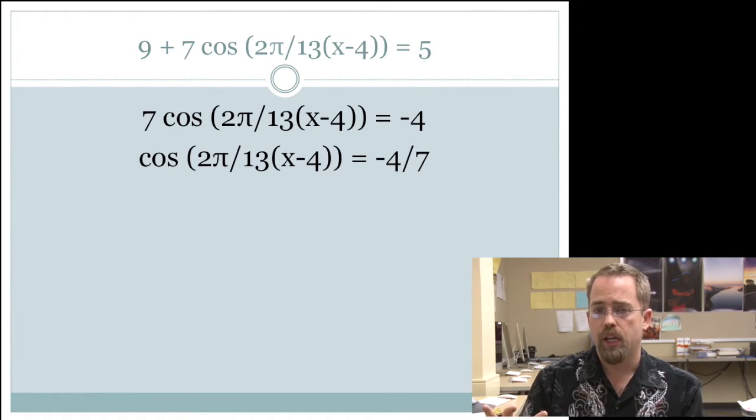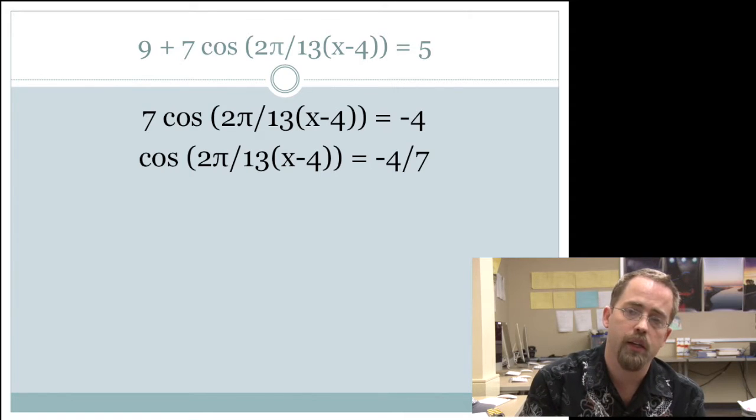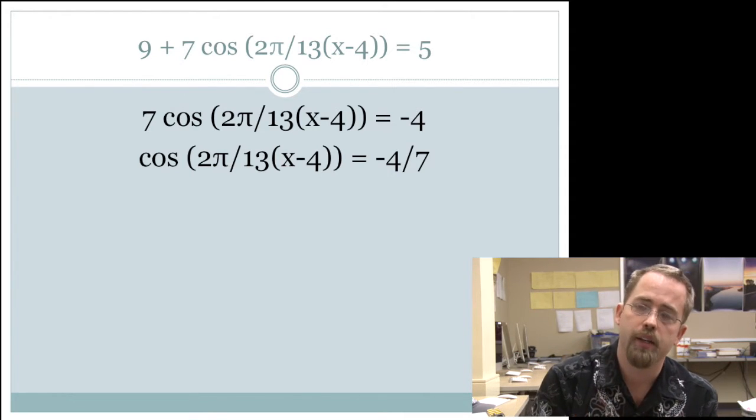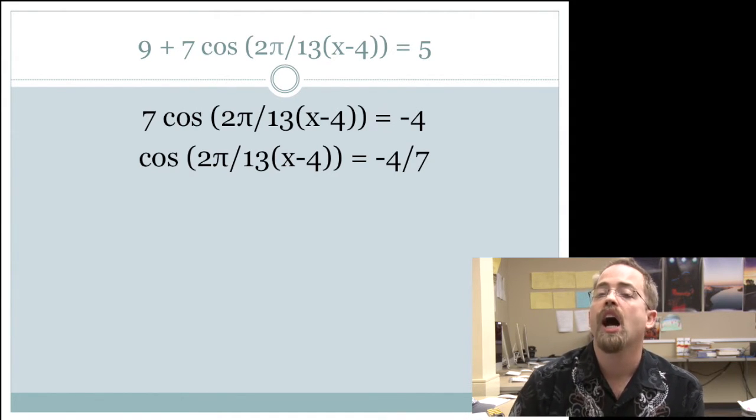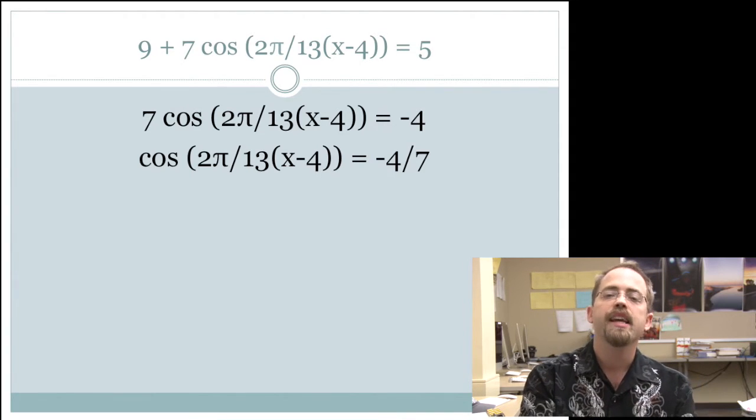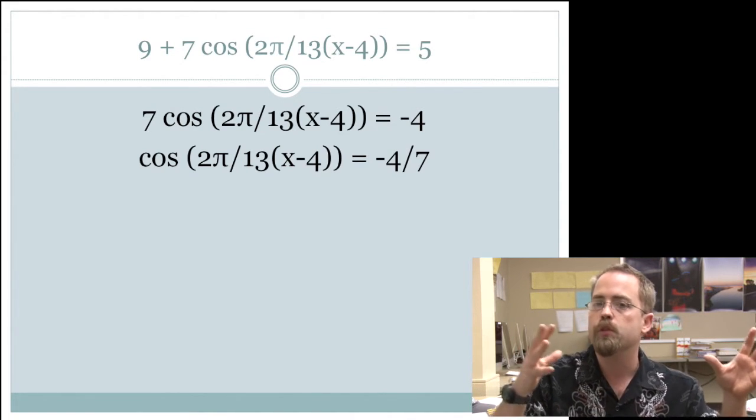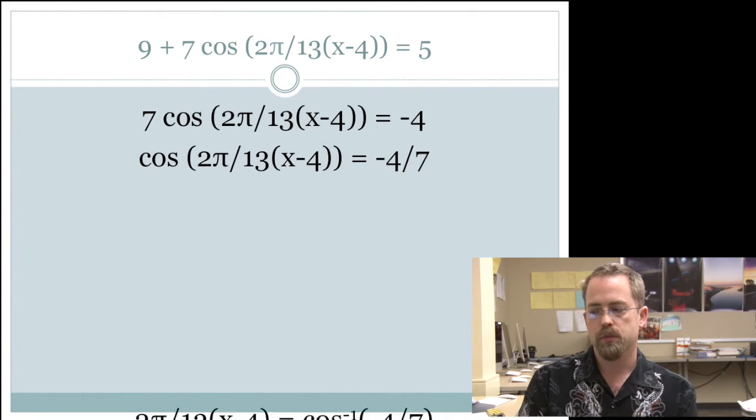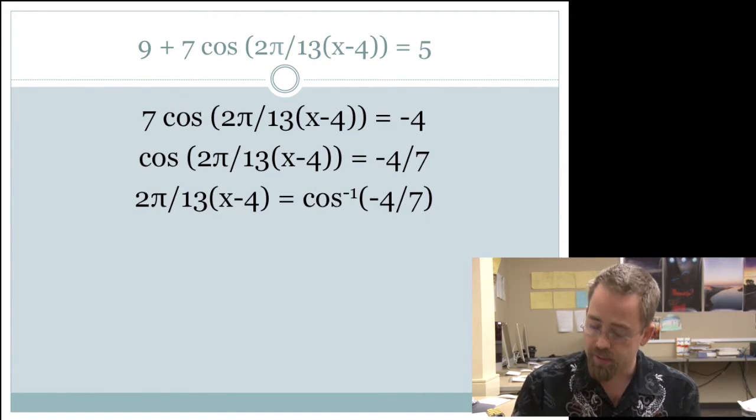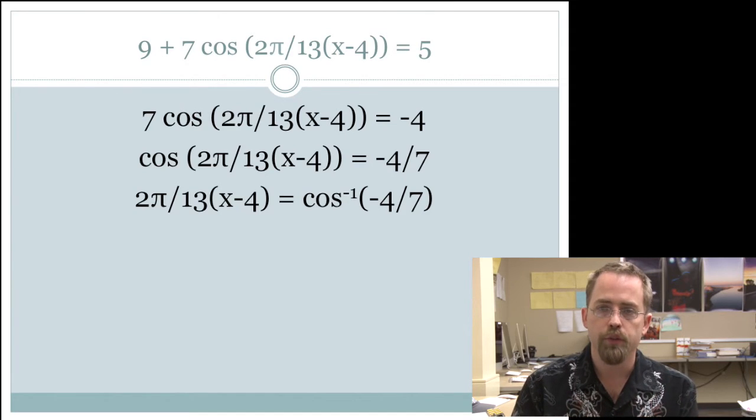Now here's the part that's why this gets its own section in the textbook. Getting rid of cosine. So when we wanted to get rid of 9, when we wanted to get rid of adding 9, we subtracted 9. We wanted to get rid of multiplying by 7, we divided by 7. What's the opposite of taking the cosine? The opposite of taking the cosine is taking the arc cosine. So if we take the arc cosine of both sides, then that will get rid of the cosine on the left and move an arc cosine over to the right. So that's the big leap, the hurdle that we'll practice in class if you don't feel comfortable with that. But I hope you can see the opposite of cosine is inverse cosine, arc cosine.